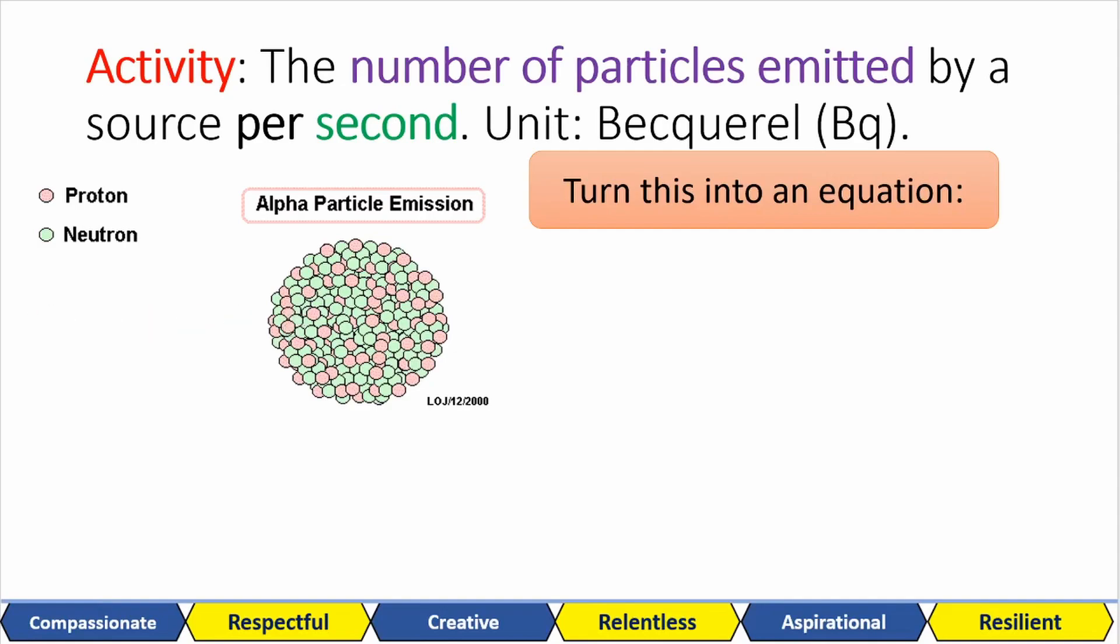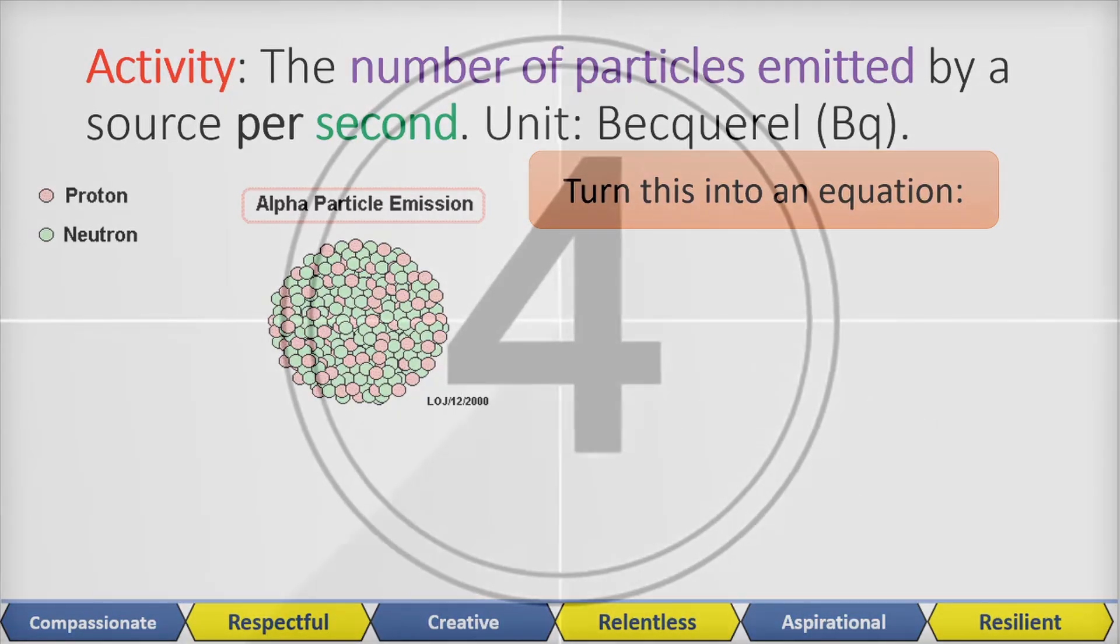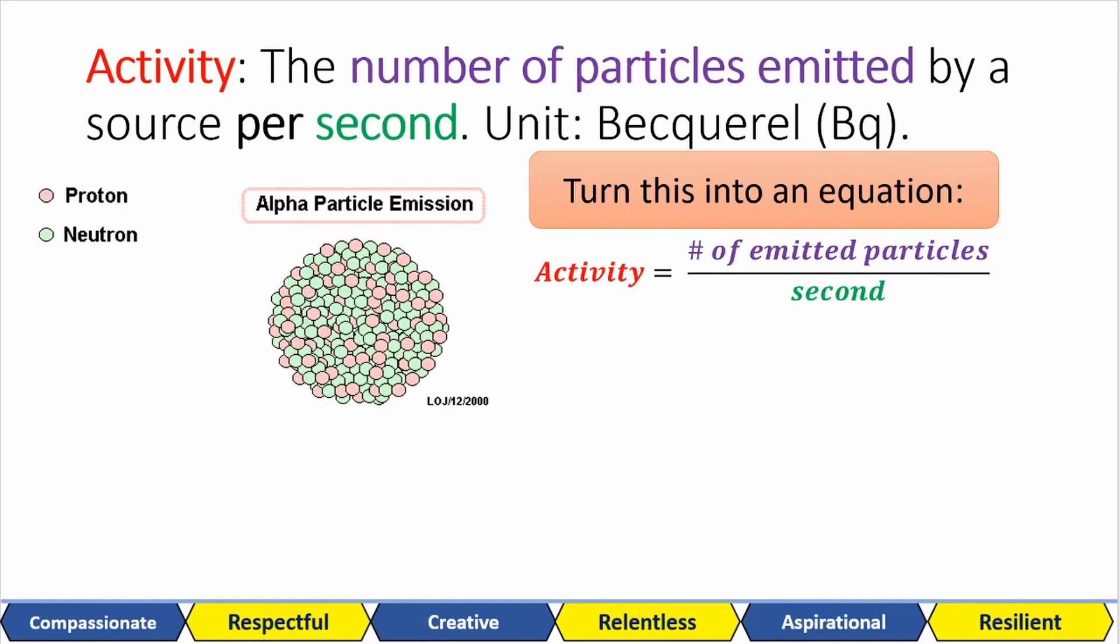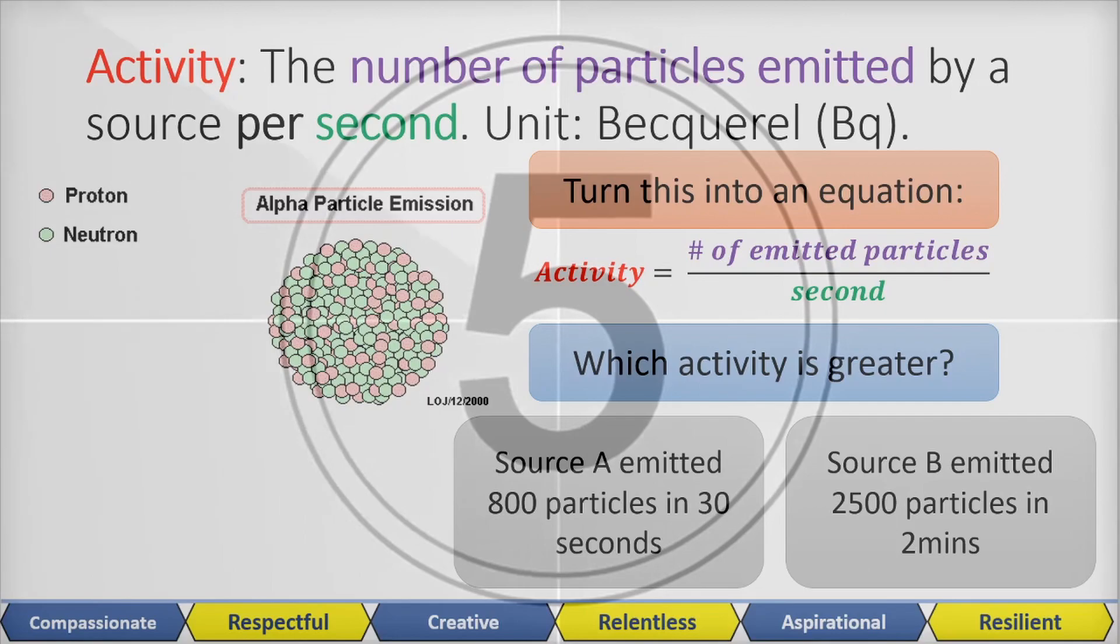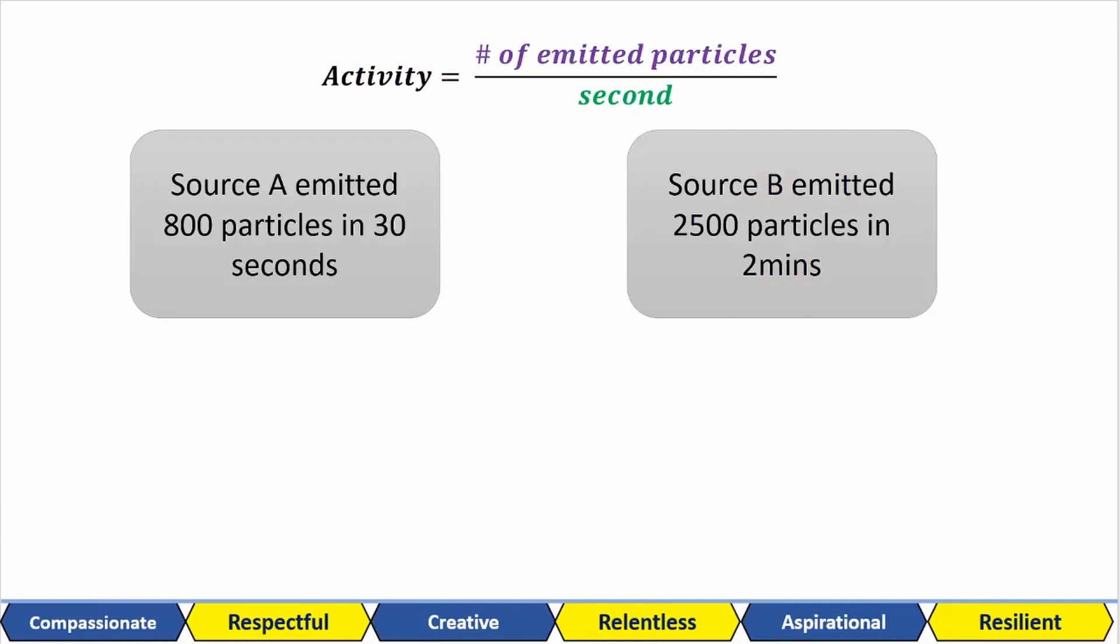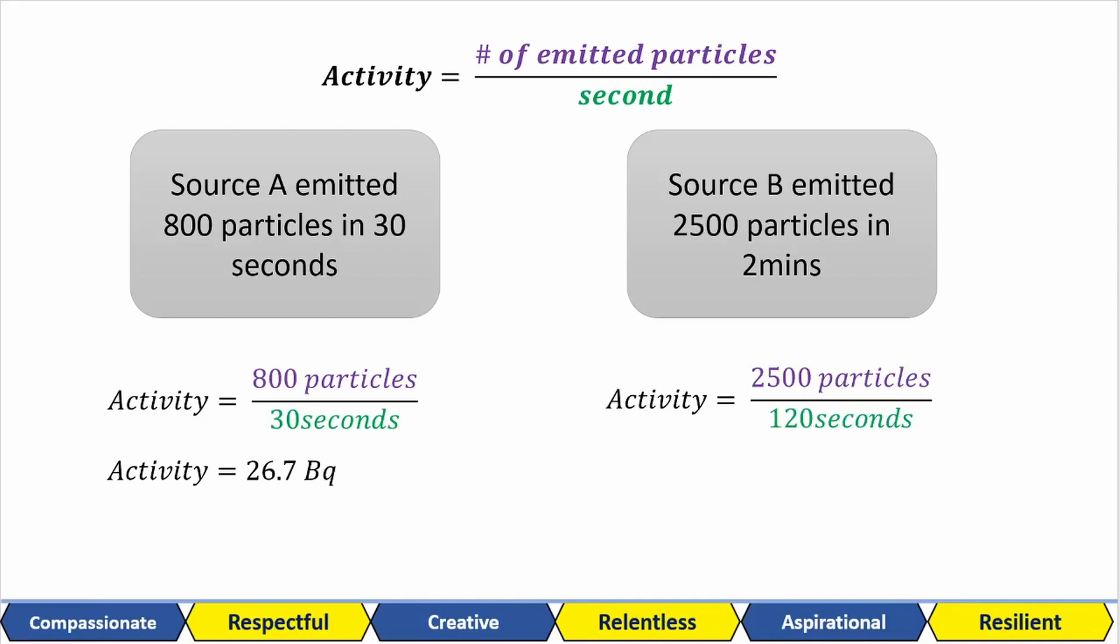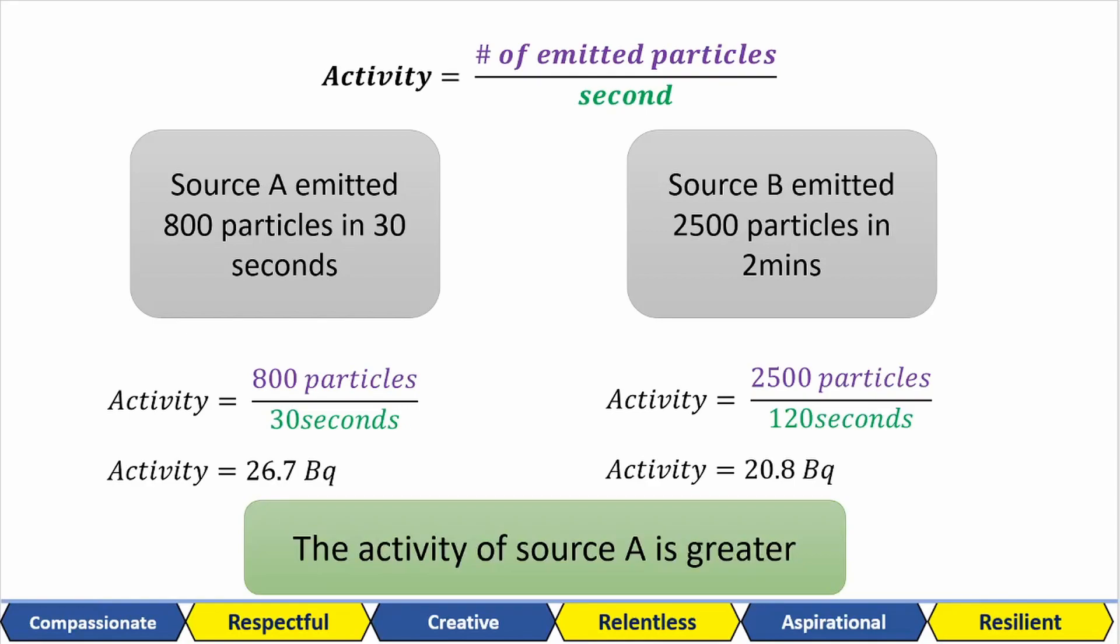Activity is the number of particles emitted by a source per second. See if you can turn this into an equation. Activity is the number of particles emitted over seconds. Now, use this equation to work out which source had the greater activity. Was it A or B? Source A will be 800 particles over 30 seconds, which gives us 26.7. And source B is 2,500 particles over 120 seconds, which gives us 20.8. So source A had a greater activity.